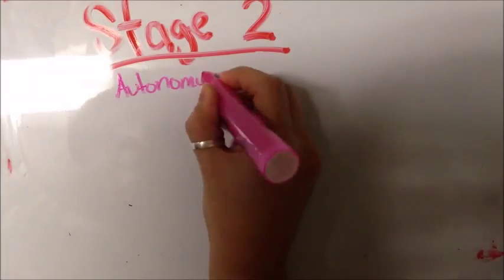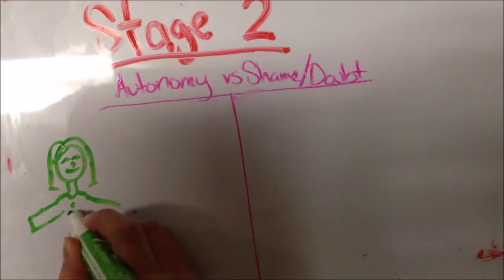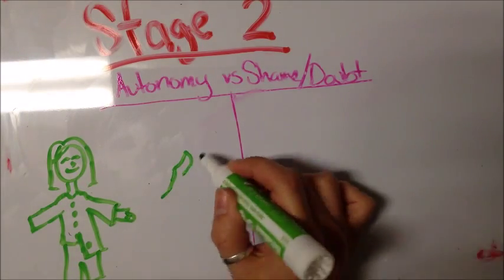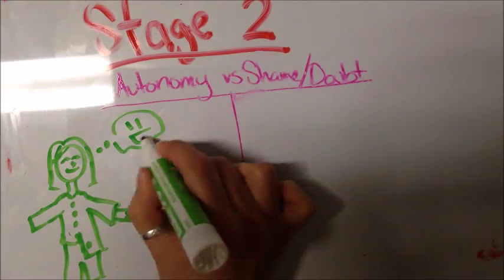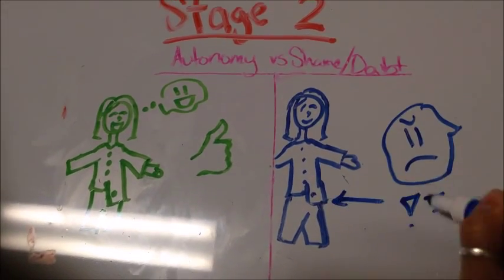Stage 2, Autonomy versus Shame and Doubt. This stage happens in toddlers who have gained muscle control and are tending to their own needs, such as clothing themselves. If caregivers encourage their behavior, toddlers can develop a sense of autonomy. However, if caregivers demand too much or ridicule their behavior, toddlers may develop shame or doubt about their abilities.